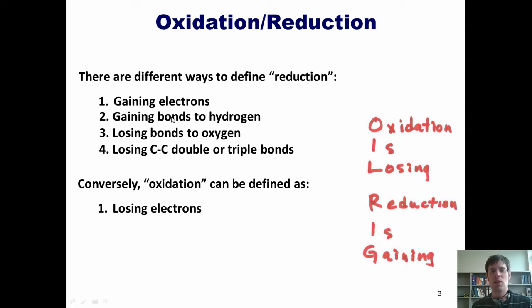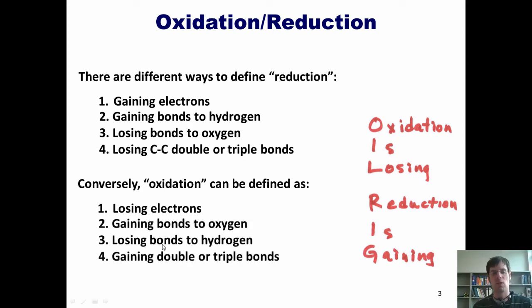As a result, I have assembled a short list of additional ways to spot oxidation and reduction reactions very quickly. If for example you see a reaction in which a starting material gains bonds to hydrogen, loses bonds to oxygen, or loses carbon-carbon double or triple bonds, then it's very likely that is a reaction in which that starting material is being reduced. Conversely, if you see a reaction in which a starting material gains bonds to oxygen, loses bonds to hydrogen, or gains double or triple bonds, you can be assured that most of the time that is a reaction in which the starting material is being oxidized.